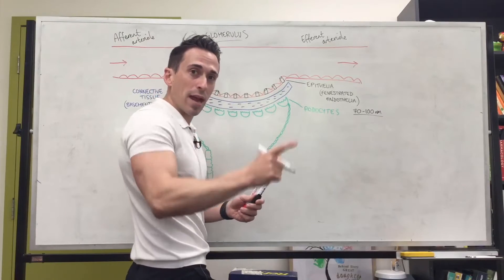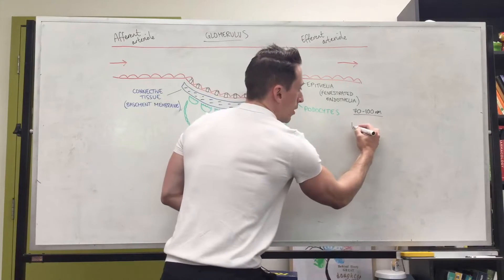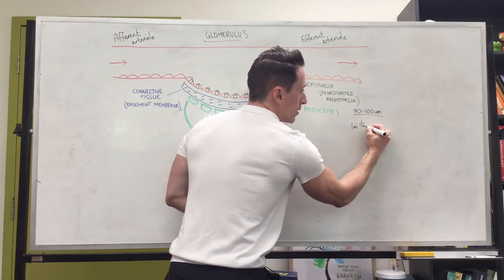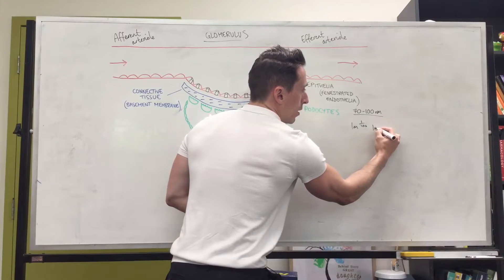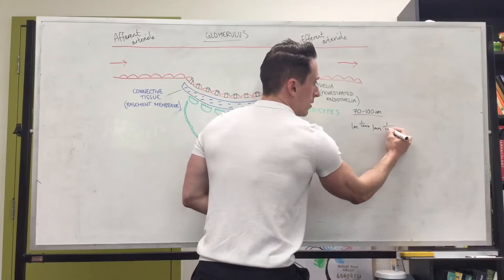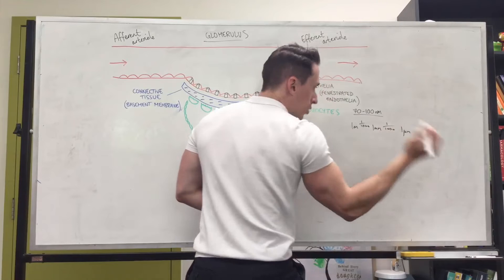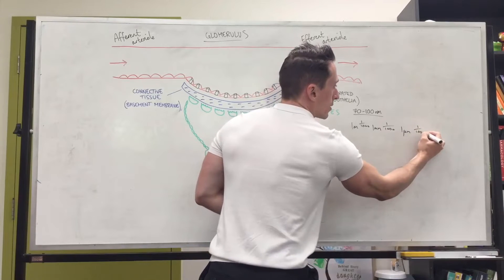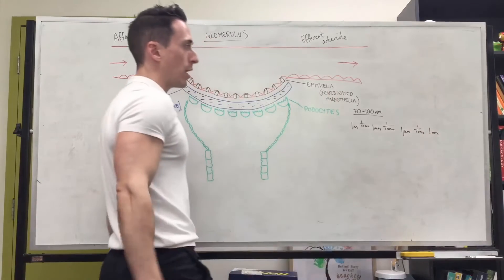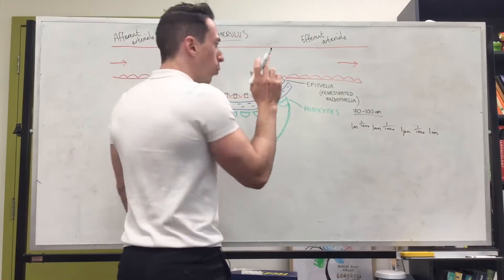You divide, so you've got one meter and then you divide it by a thousand and you get one millimeter. You divide that by a thousand and you get one micrometer. You divide that by one thousand and you get one nanometer. All right? So 70 to 100 nanometers, very small. What can it let through? Well, let's think about it.